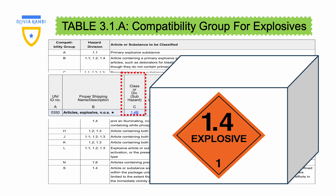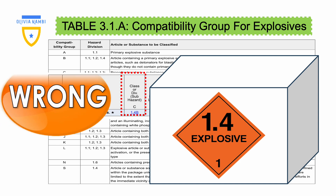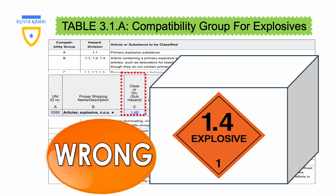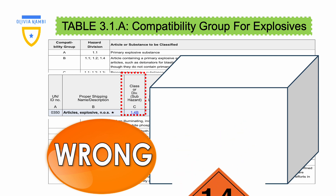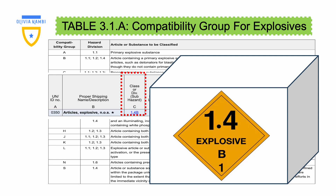When it comes to labeling explosive packages, ensure to select the correct hazard label, which has the division, the class number, and the compatibility group. In this example, we have a wrong hazard label as it does not have a compatibility group inscribed. The correct hazard label should look like so: 1.4B.